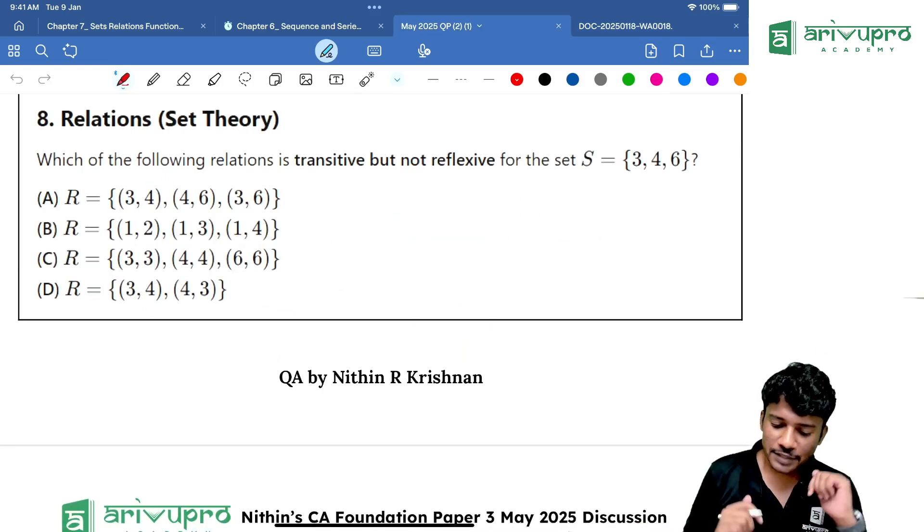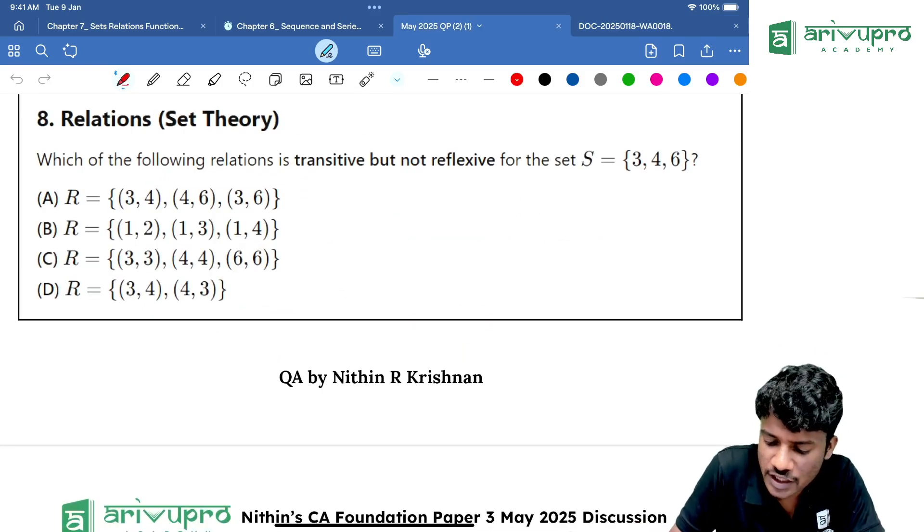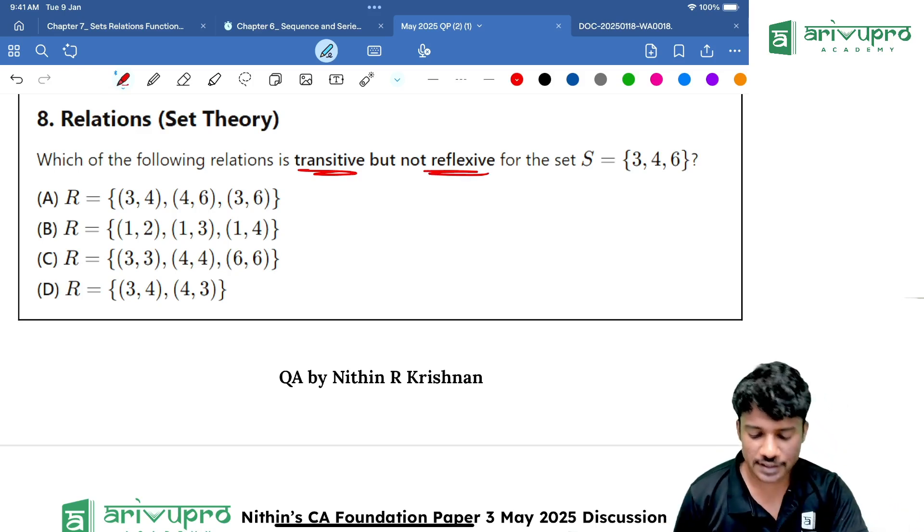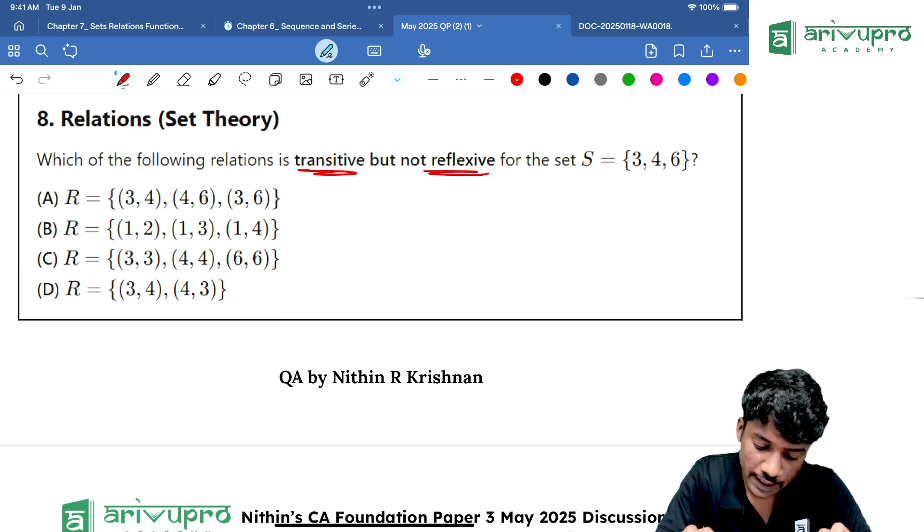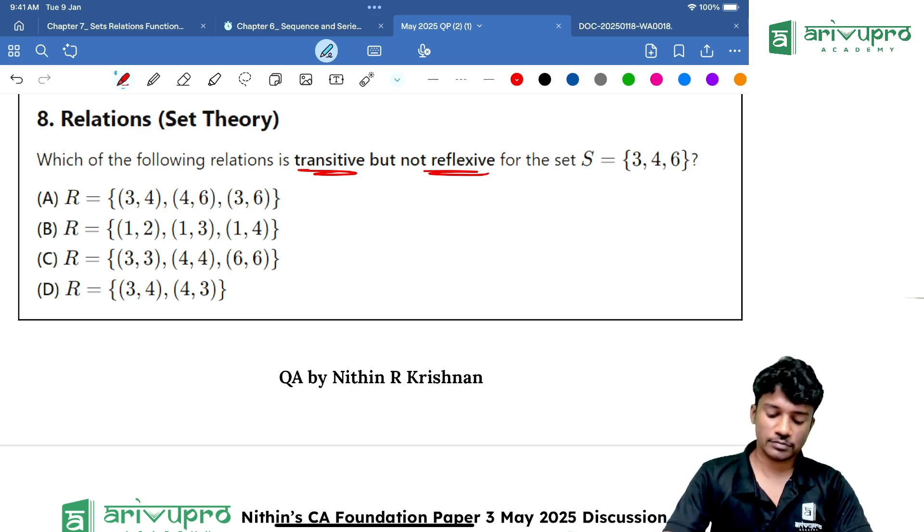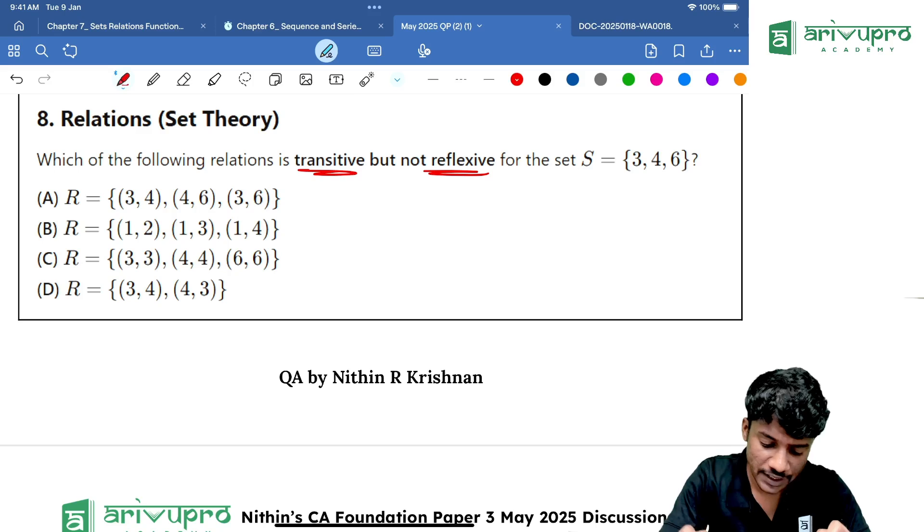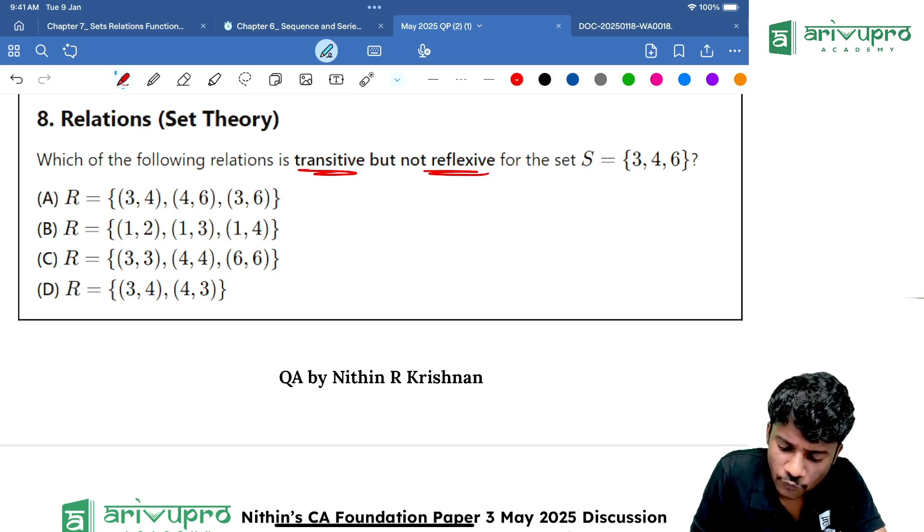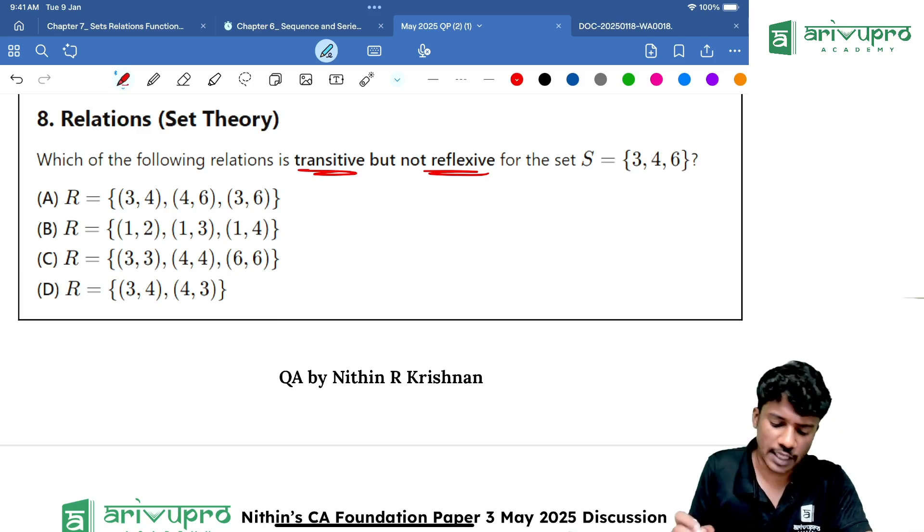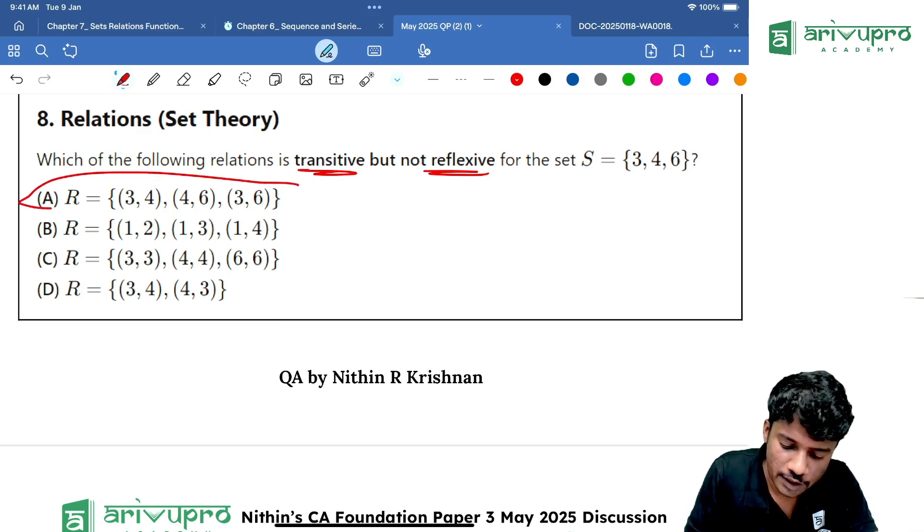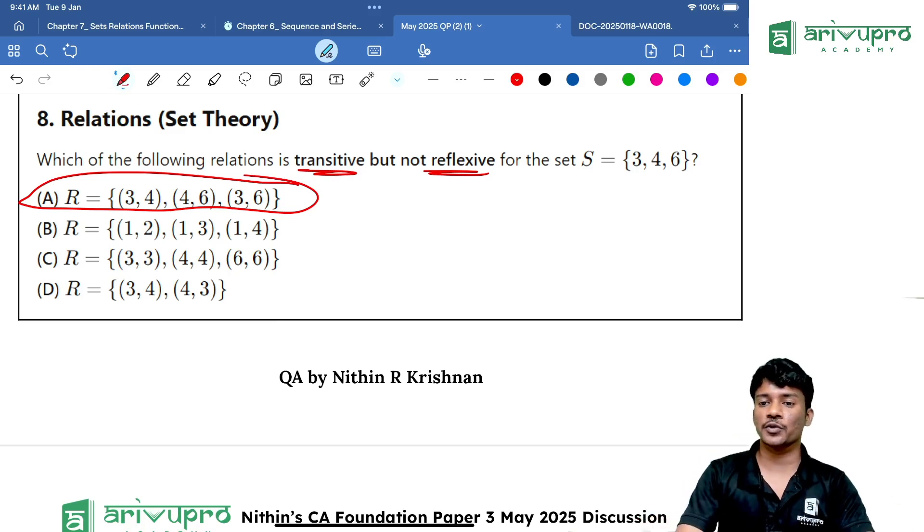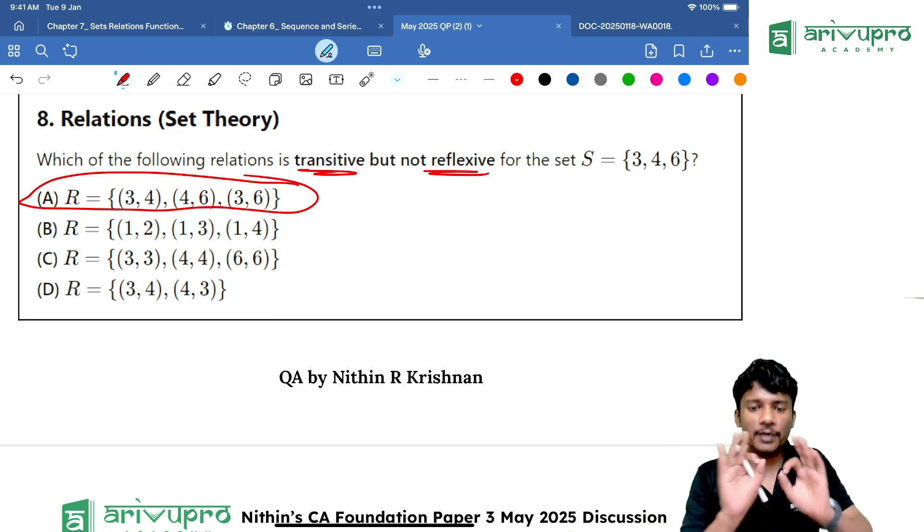People, relations. Which of the following relation is transitive but not reflexive? Option A is transitive. Look here, 3, 4. That will give 4, 6 will give you 3, 6. That means option A is transitive but not reflexive. When it will be reflexive? 3, 3, 4, 4, and 6, 6 should be there. Then it is reflexive. Perfect. Good.